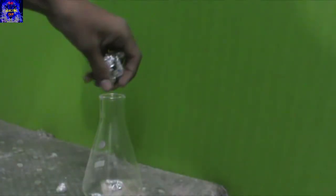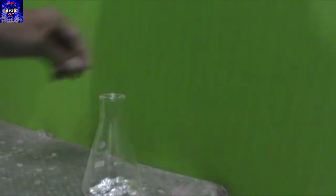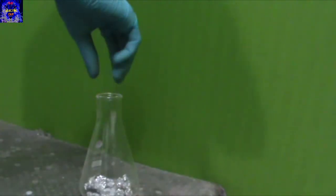After it is done, add aluminum foil pieces to a conical beaker followed by sodium hydroxide pellets.